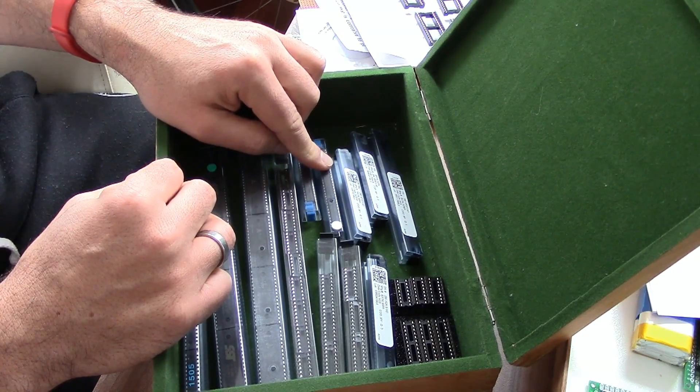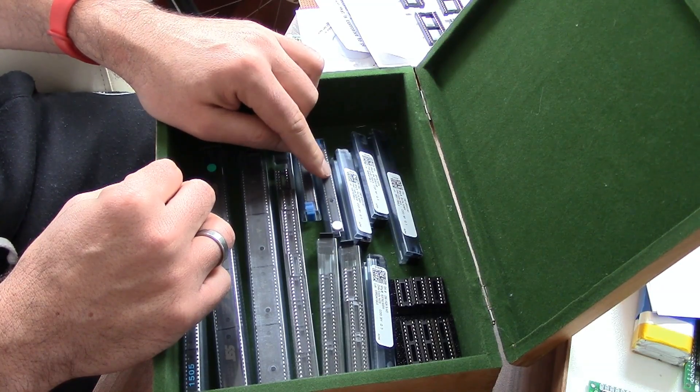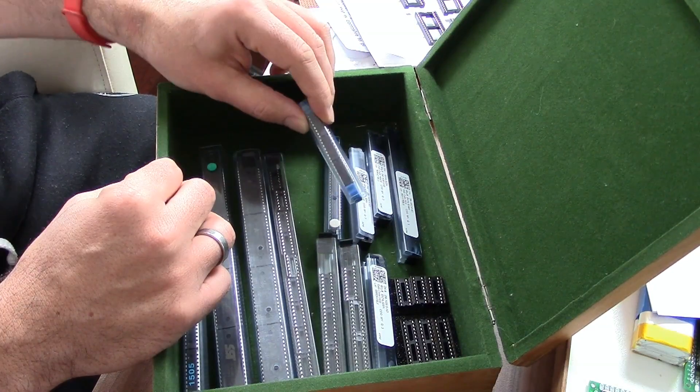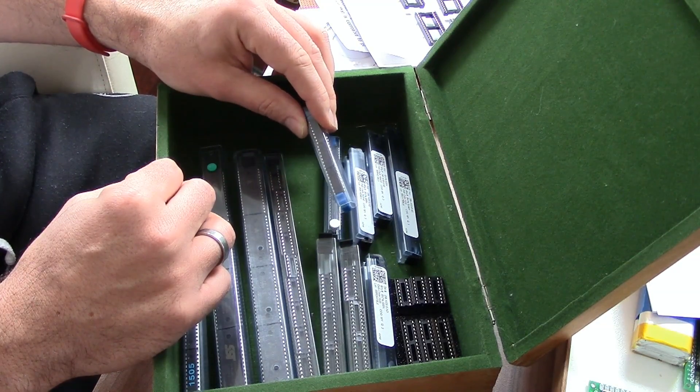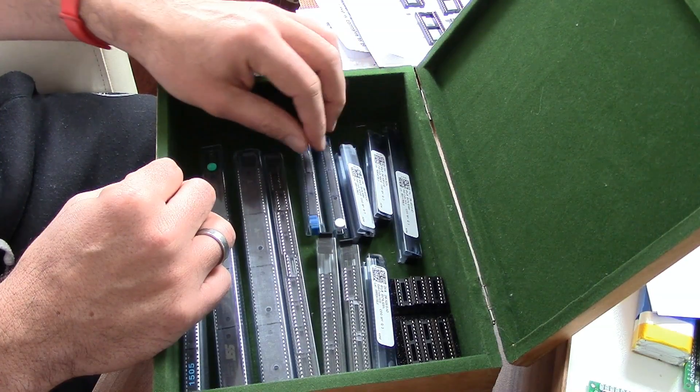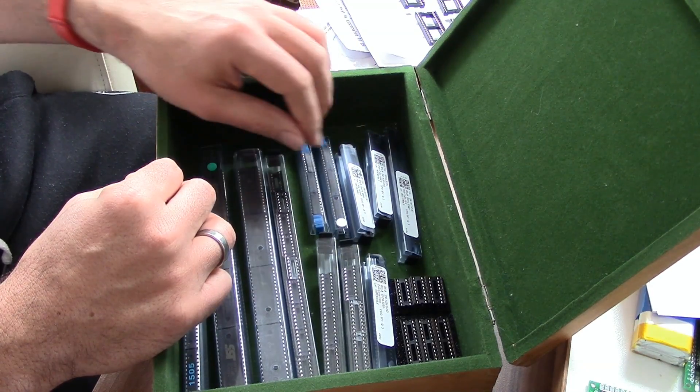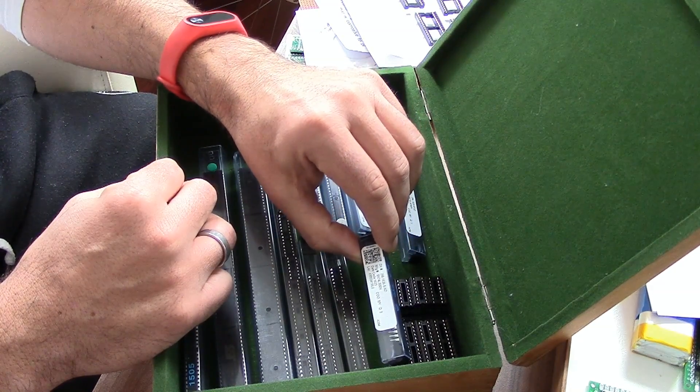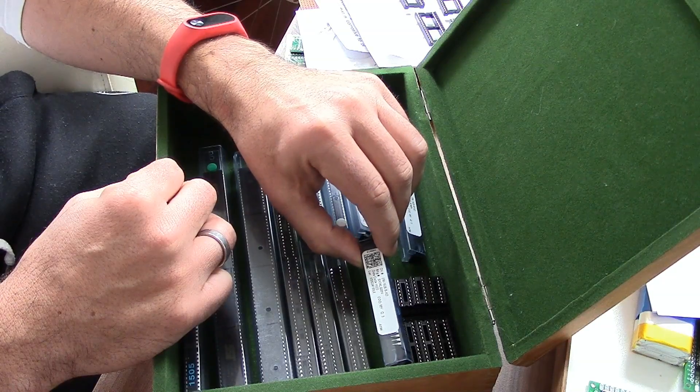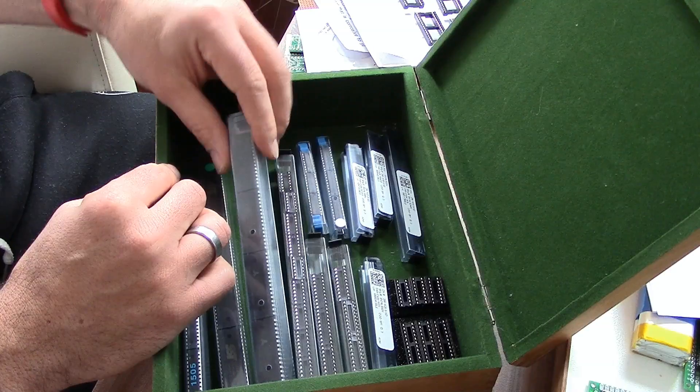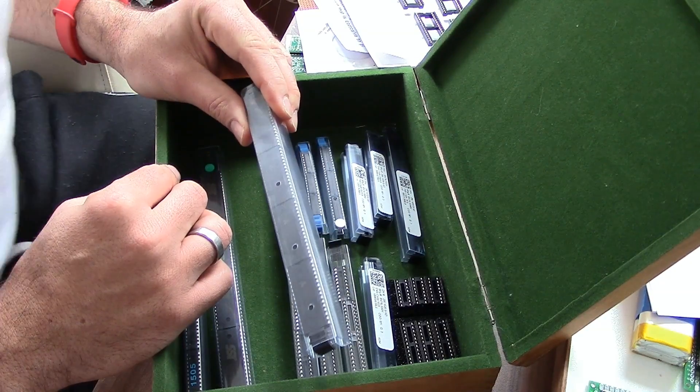Then here is the 377 which is flip-flops, and then we have the demultiplexer that's also for the RAM and flash chips as far as I understand. Here we have the 00 which is NAND gate.